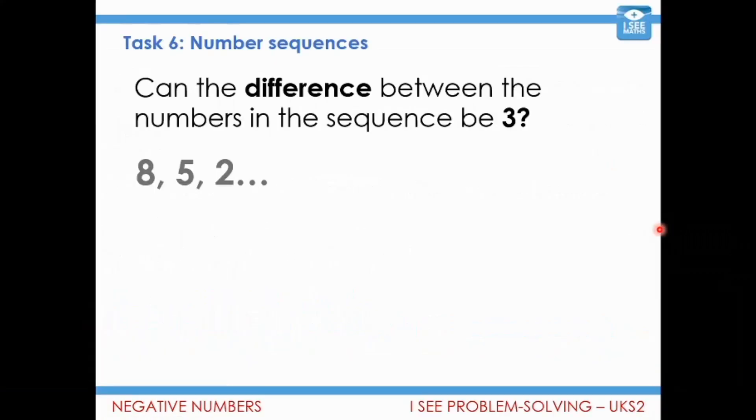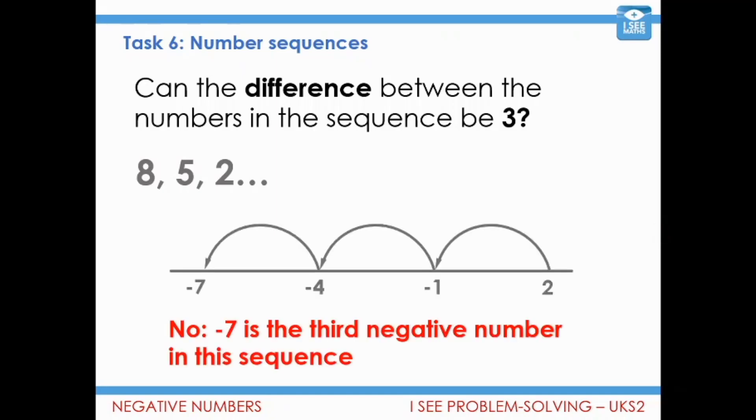So here we go. We're going to have a look at some different possible sequences. And we're going to consider what we could have subtracted in steps of. So can the difference between the numbers in the sequence be three? Can we be subtracting in threes? Would this work? Now, all the examples we're going to look at, minus seven is in the sequence. So let's have a look at this one. So we would go to the two and then we'd have minus one, minus four, minus seven. So no, that doesn't work because minus seven is the third negative number in this sequence. So steps of three are too small to make minus seven the second negative number.